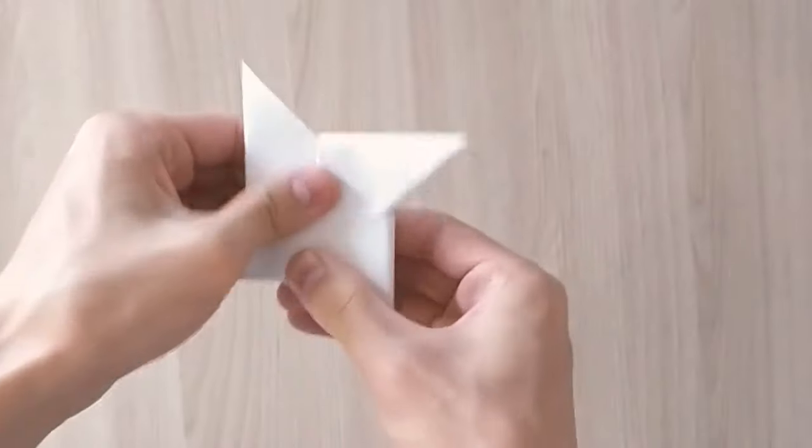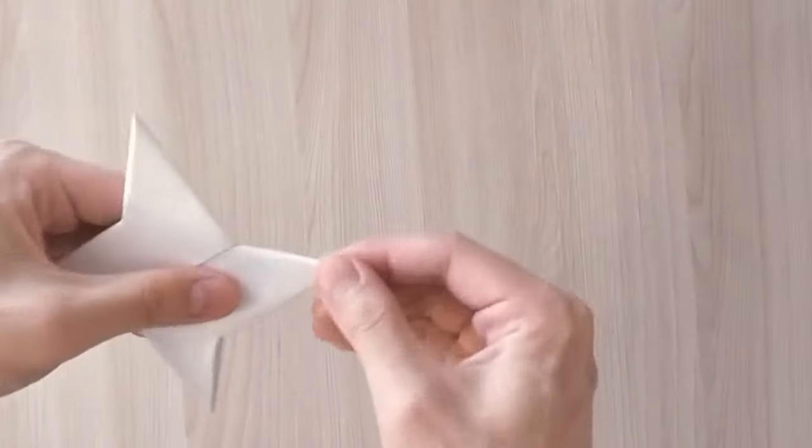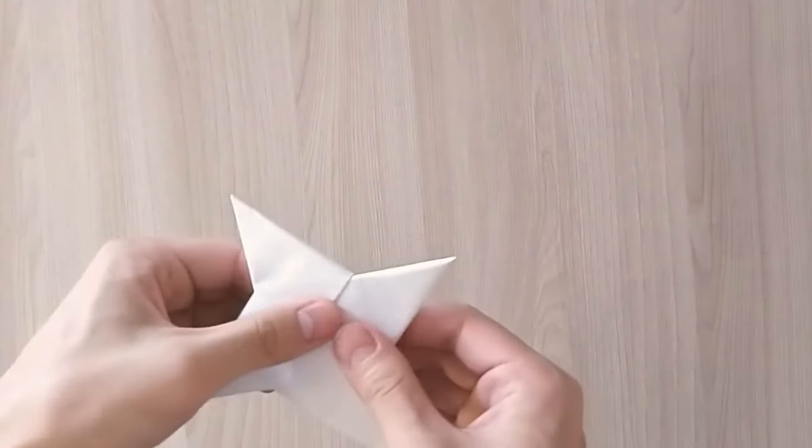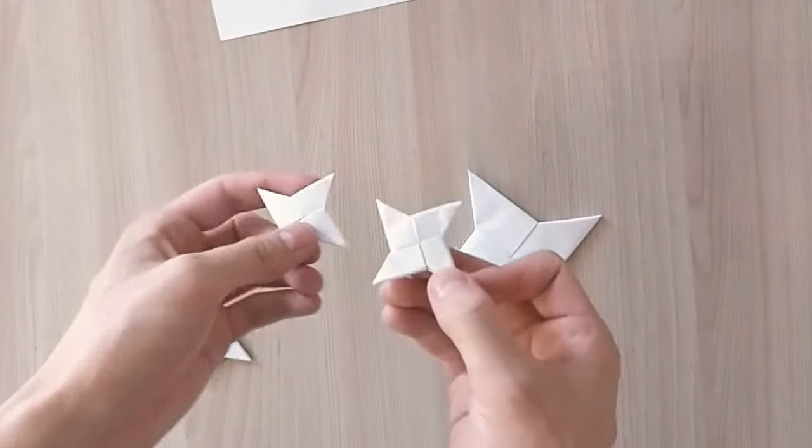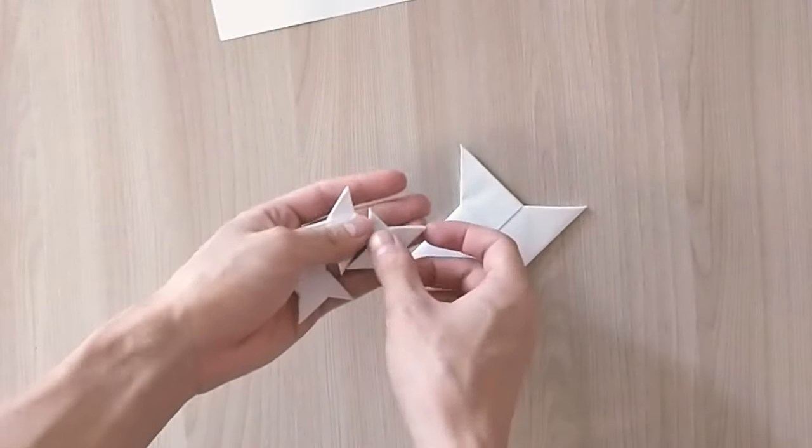So yeah, that's pretty much it. There's your star. Once you've done this model with the bigger sheets of paper, you can do it with the smaller ones. It can just get a little tricky if you start off with the small ones.